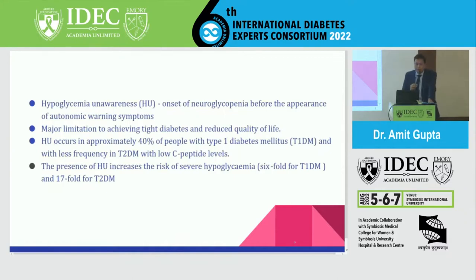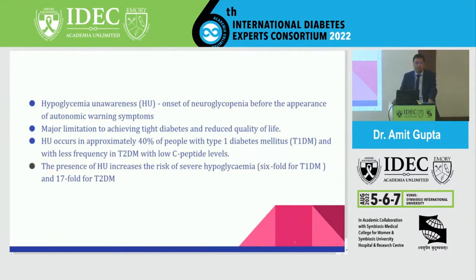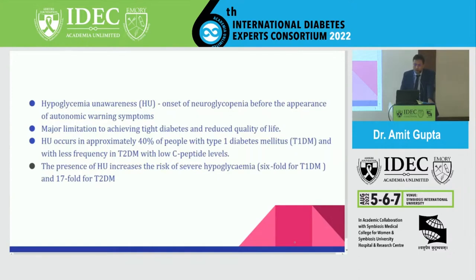Hypoglycemic unawareness is defined as the onset of neuroglycopenia before the appearance of autonomic warning symptoms. There are two categories of symptoms: neurogenic and neuroglycopenic. Once hypoglycemia sets in, the patient does not get warning signs and immediately lands into the neuroglycopenic phase. This can be a major challenge when achieving tight diabetes control and can lead to reduction in quality of life.